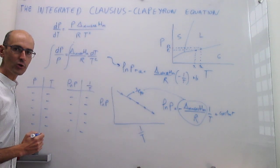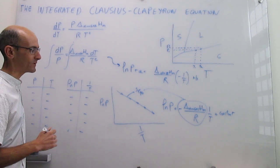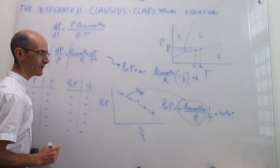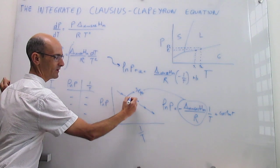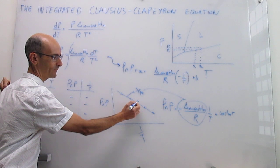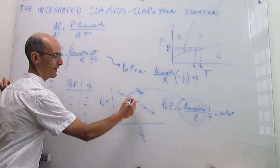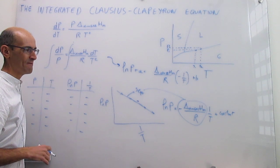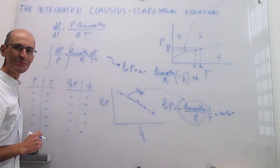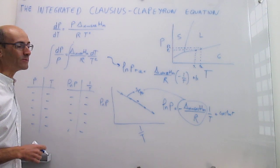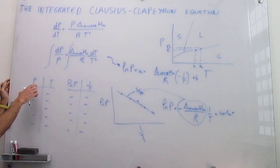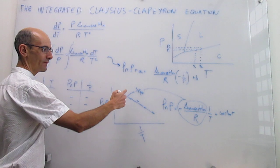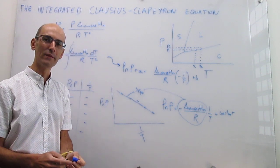This multi-point approach is far more robust than using two points. If one data point carries experimental error, it gets washed away by the rest of the points in the fit, whereas two-point calculations are completely thrown off by a single bad point. This is actually how the values of vaporization enthalpies and sublimation enthalpies in tables are determined — by measuring vapor pressure as a function of temperature, using the integrated Clausius-Clapeyron equation to fit those values, and extracting the enthalpy from the slope.